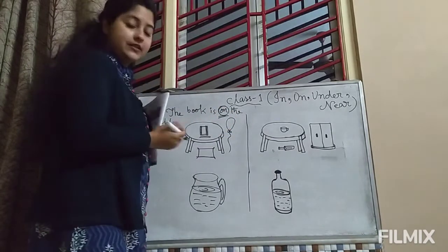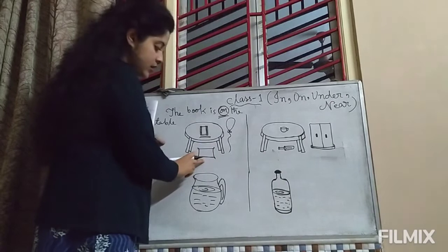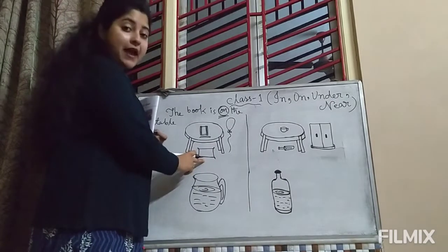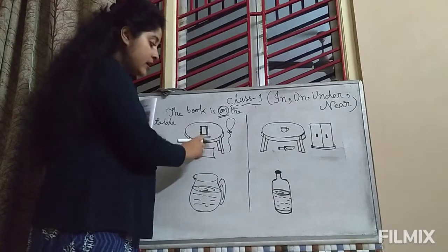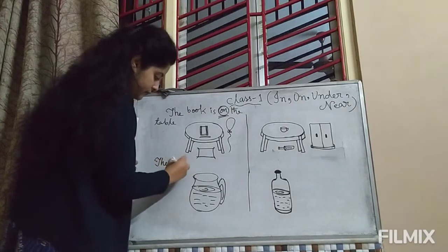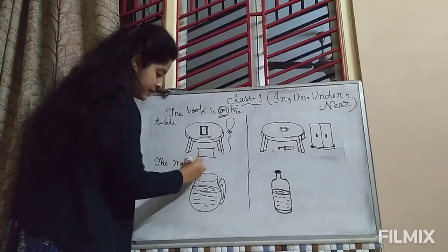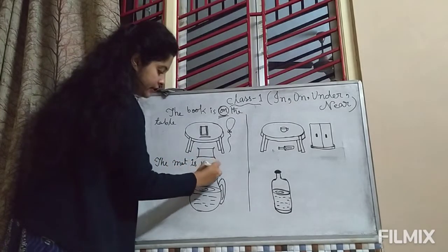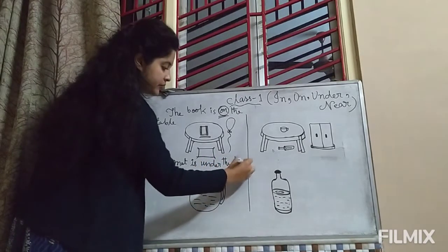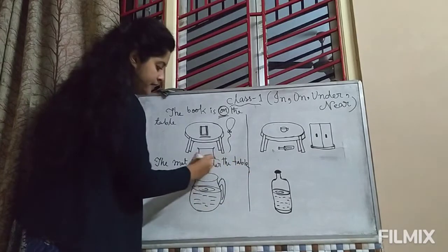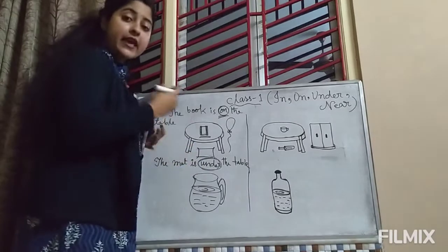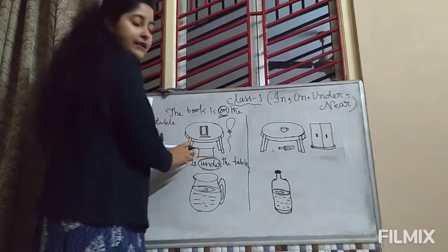Next, where is the mat? This is the mat — where is the mat? The mat is under the table. So here the word 'under' is saying about the position of the mat.